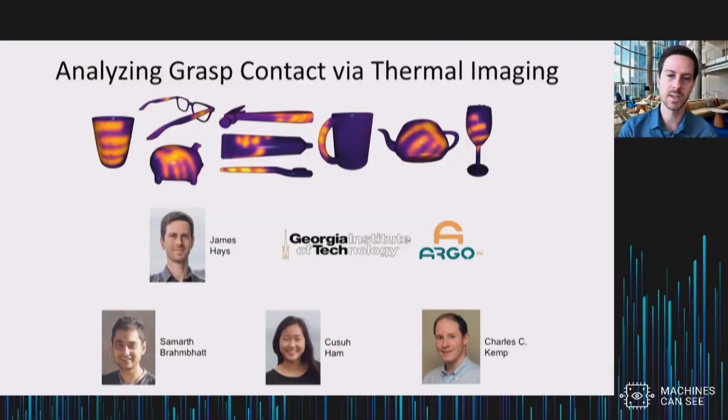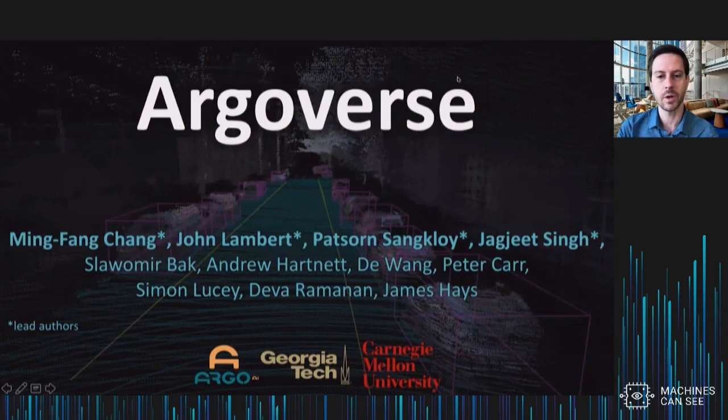Hi, I'm James Hayes and it's my pleasure to be presenting to you. Today I'm going to be talking about using thermal imaging to understand human grasping of objects. I'm a professor at Georgia Tech and a scientist at Argo AI. Before I start talking about the main work today, thermal grasping, I want to advertise some of the work that's come out of Argo, in particular a dataset we released last summer at CVPR called Argoverse.